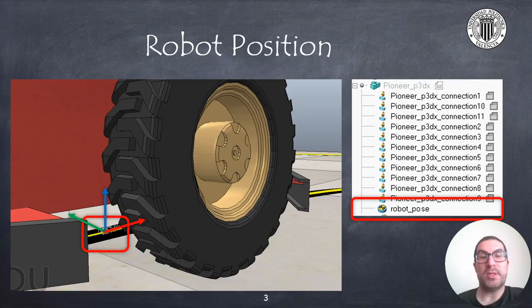So we will start by preparing the simulation scene. We need to create a dummy that will be child of the Pioneer P3DX robot, and it must be aligned with the wheels, with the X, Y, and Z axis pointing as indicated in the figure.